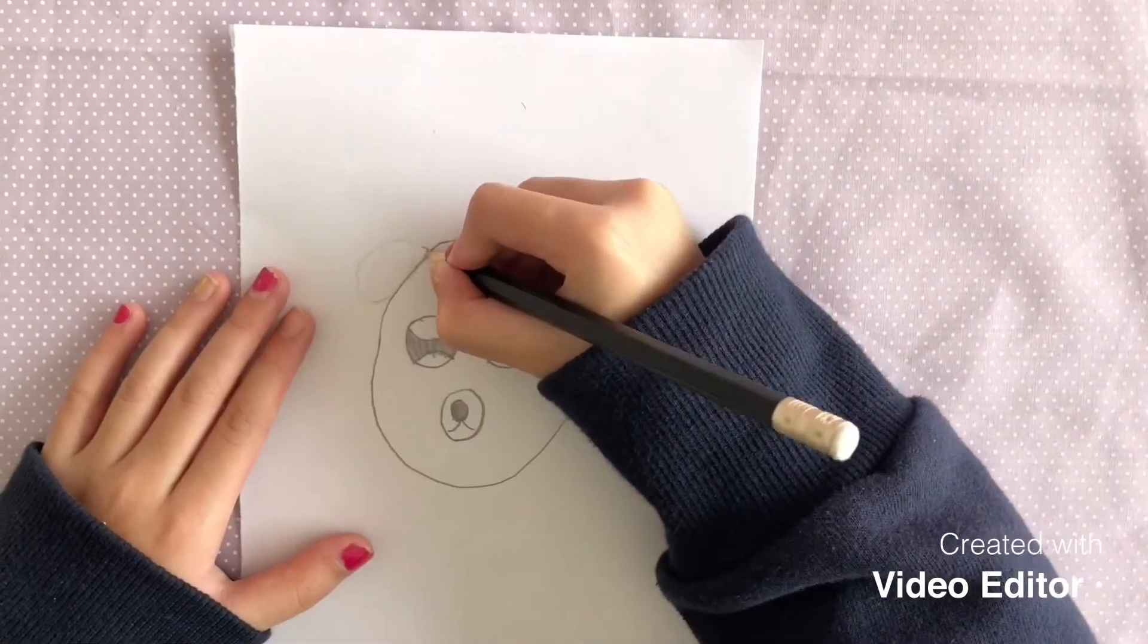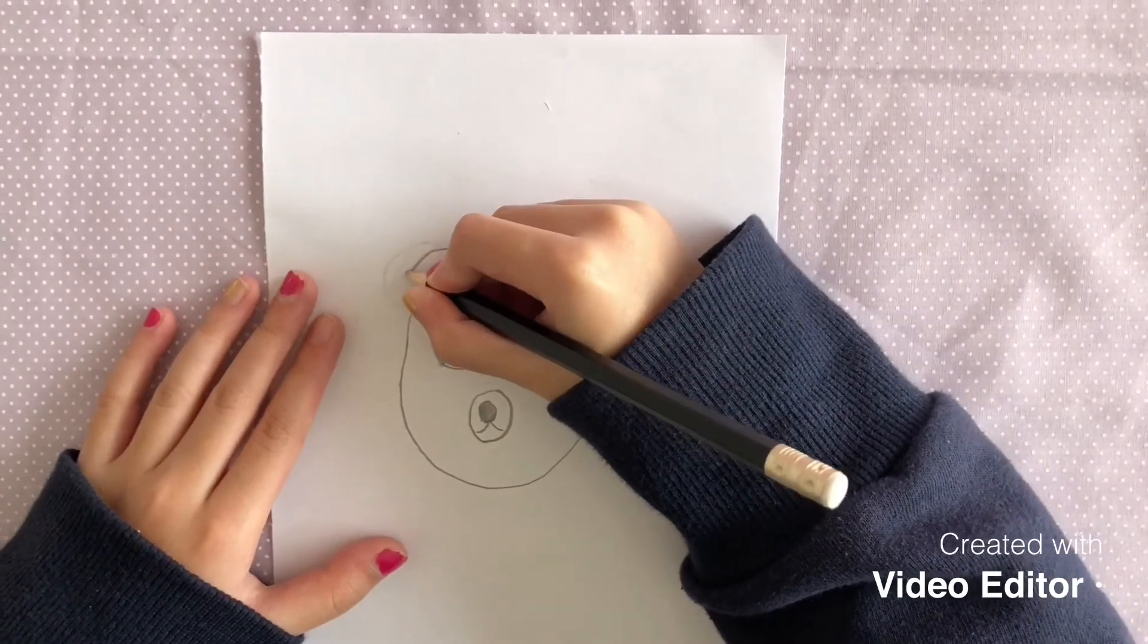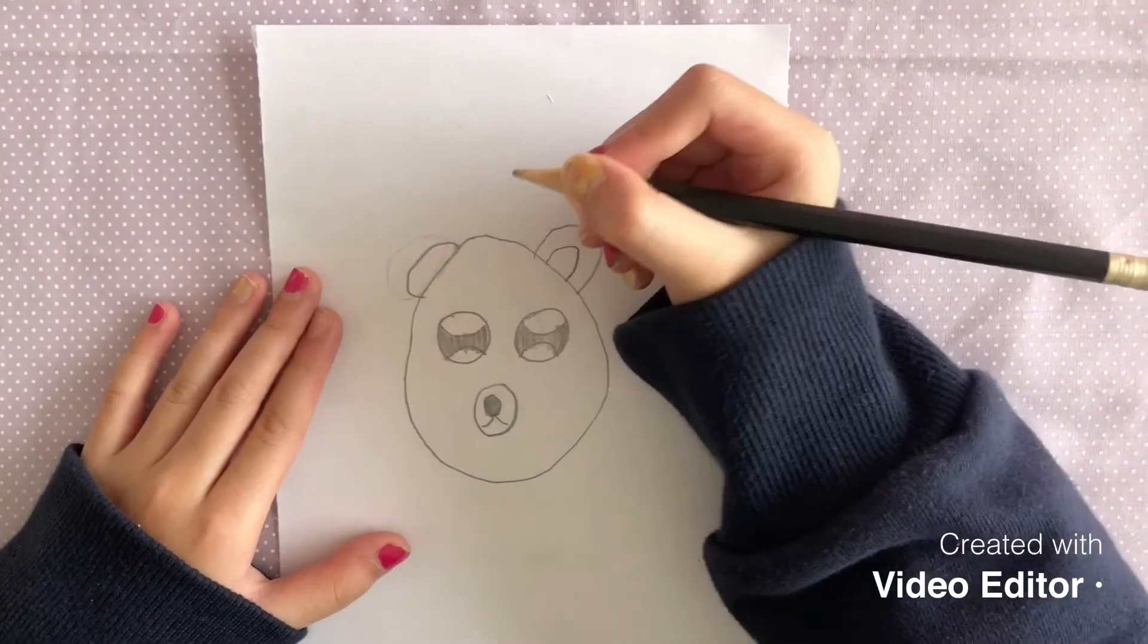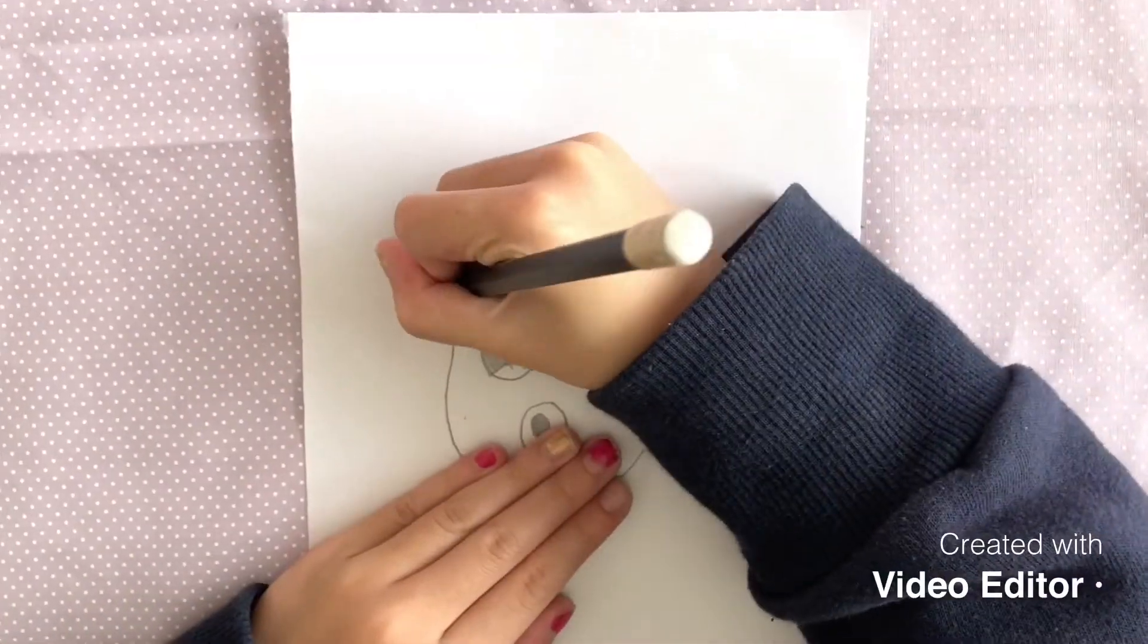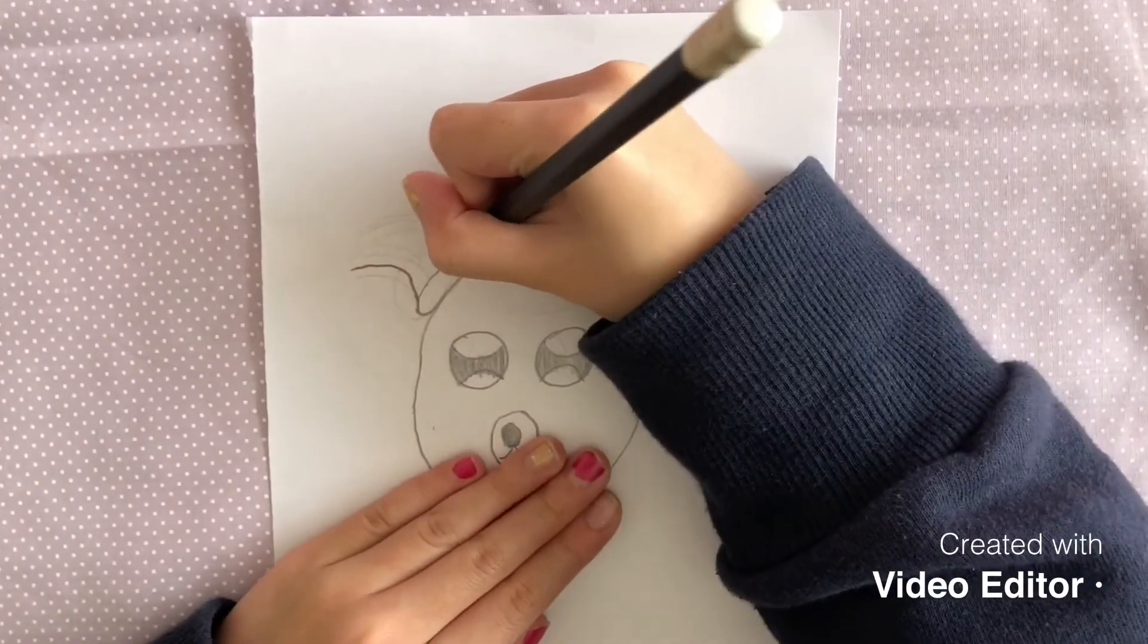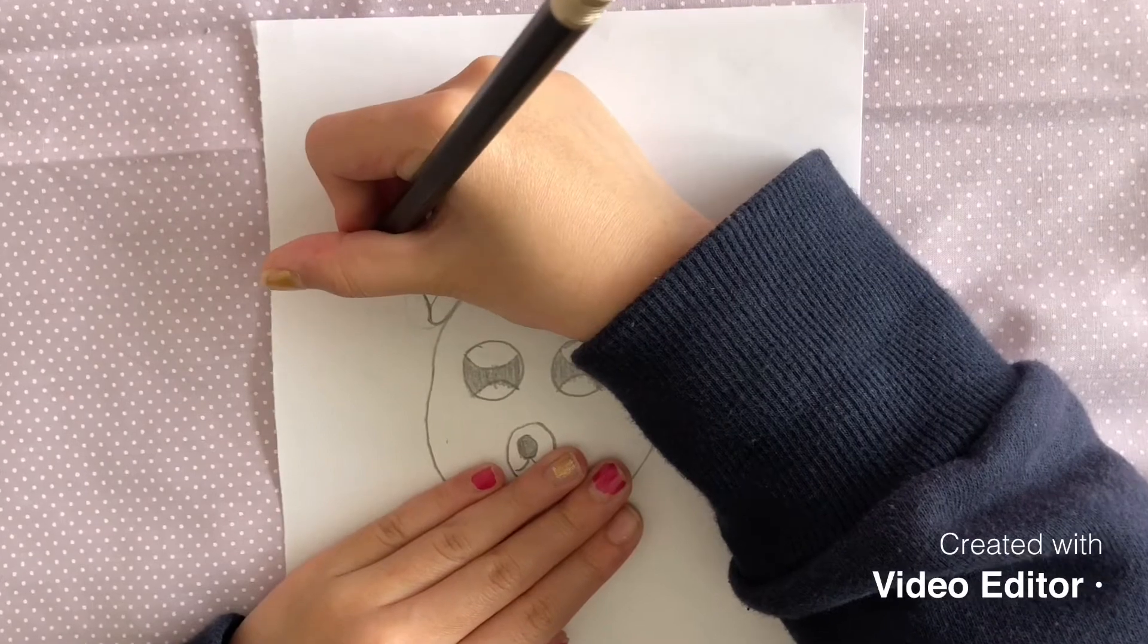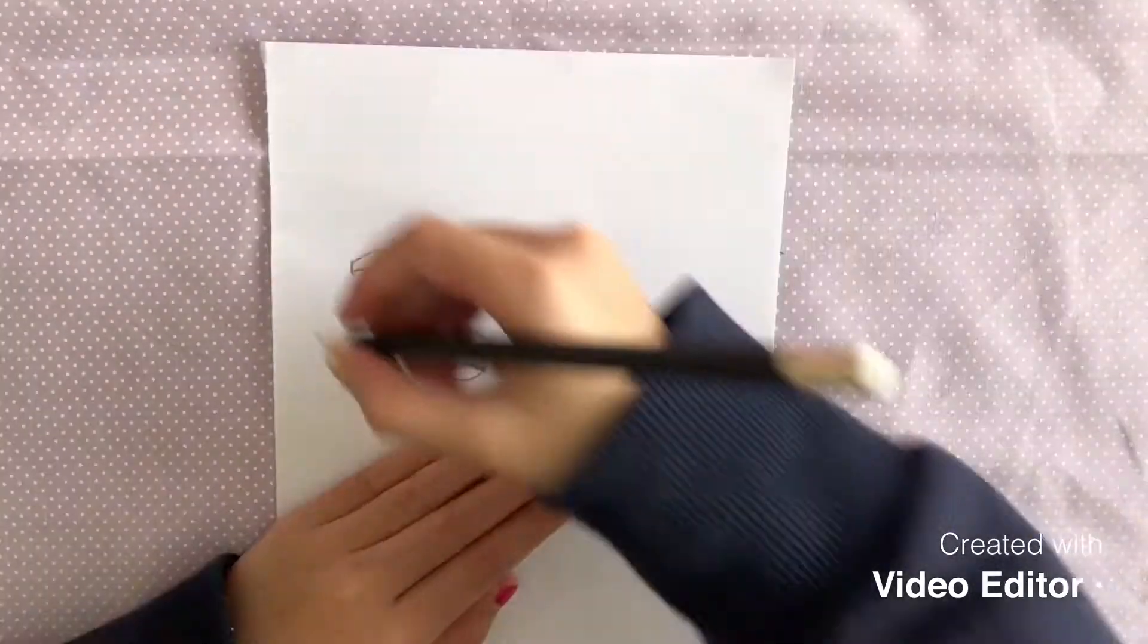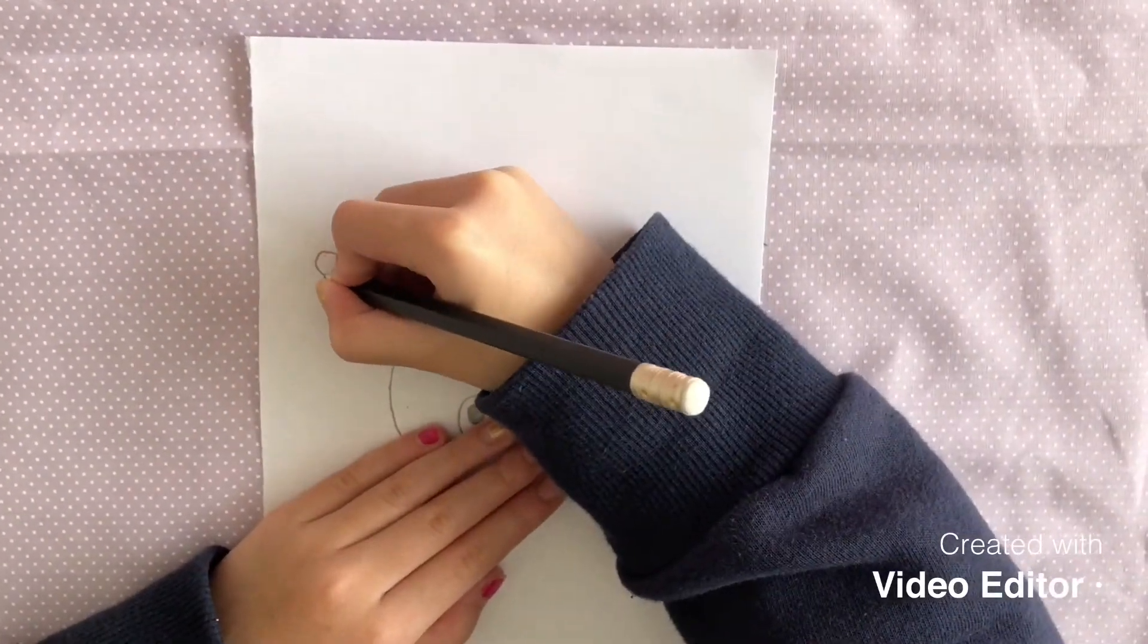Draw an oval on the other side of the head. Draw a curved line and draw another one to connect it. And draw a circle at the end of it.